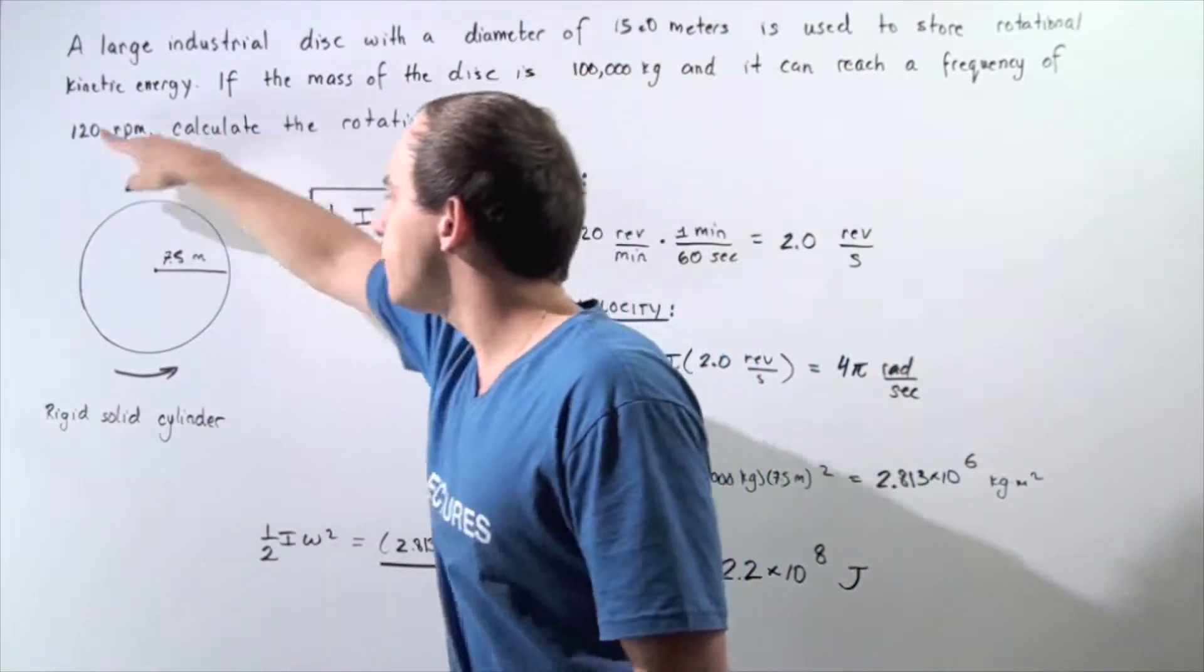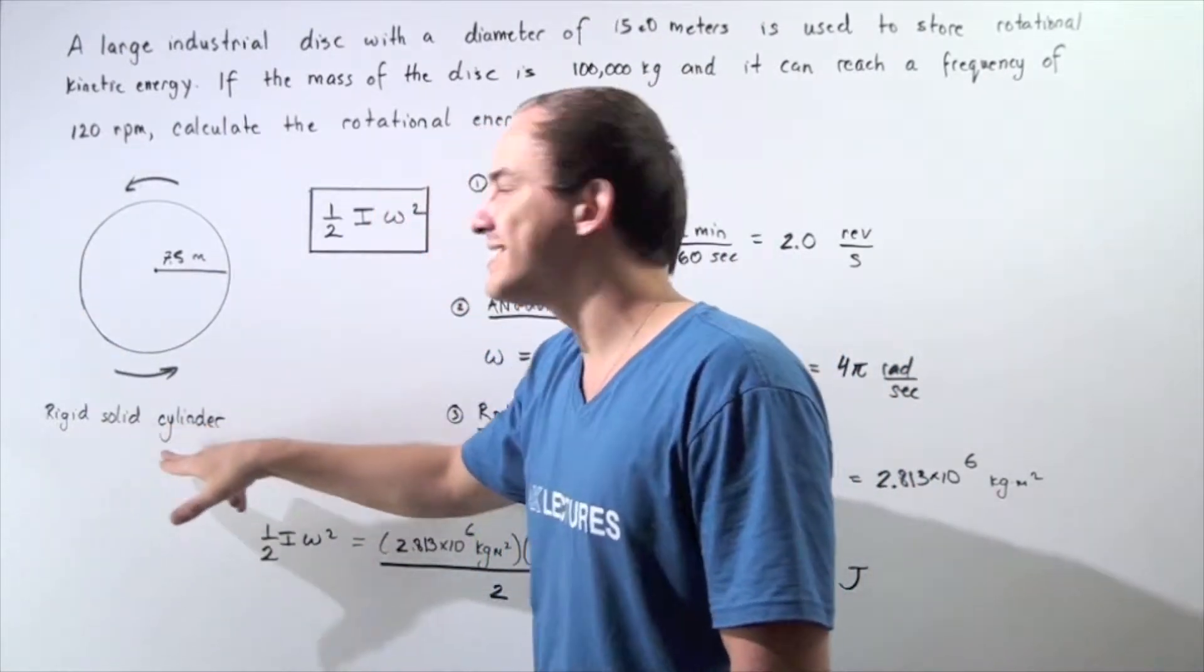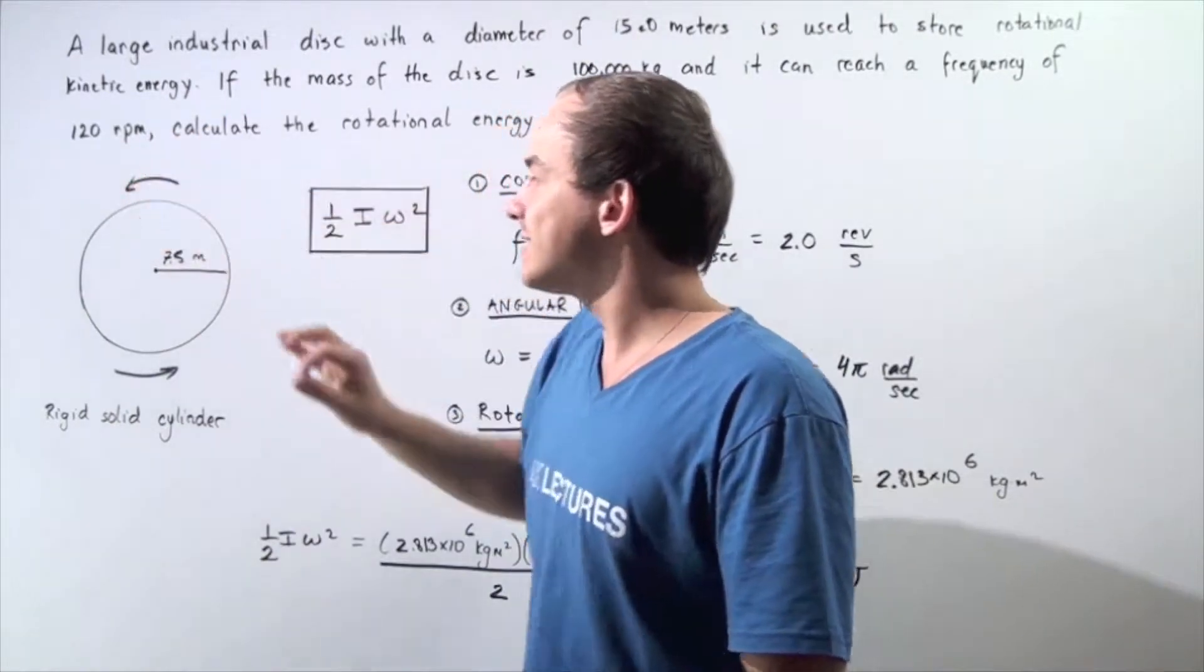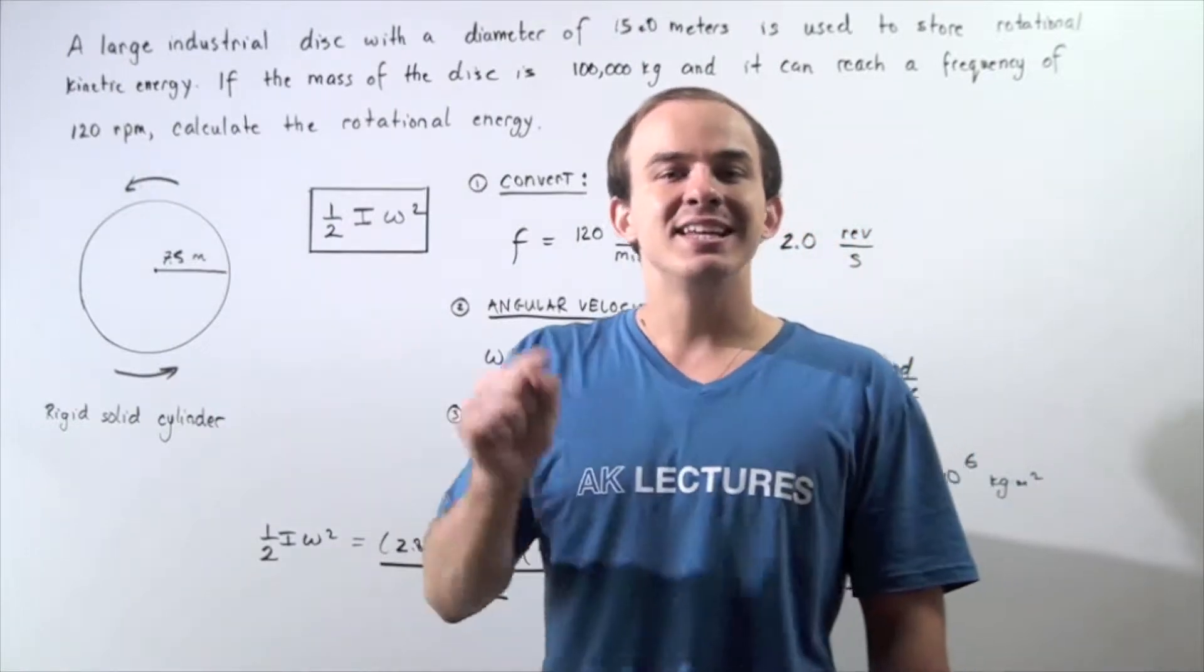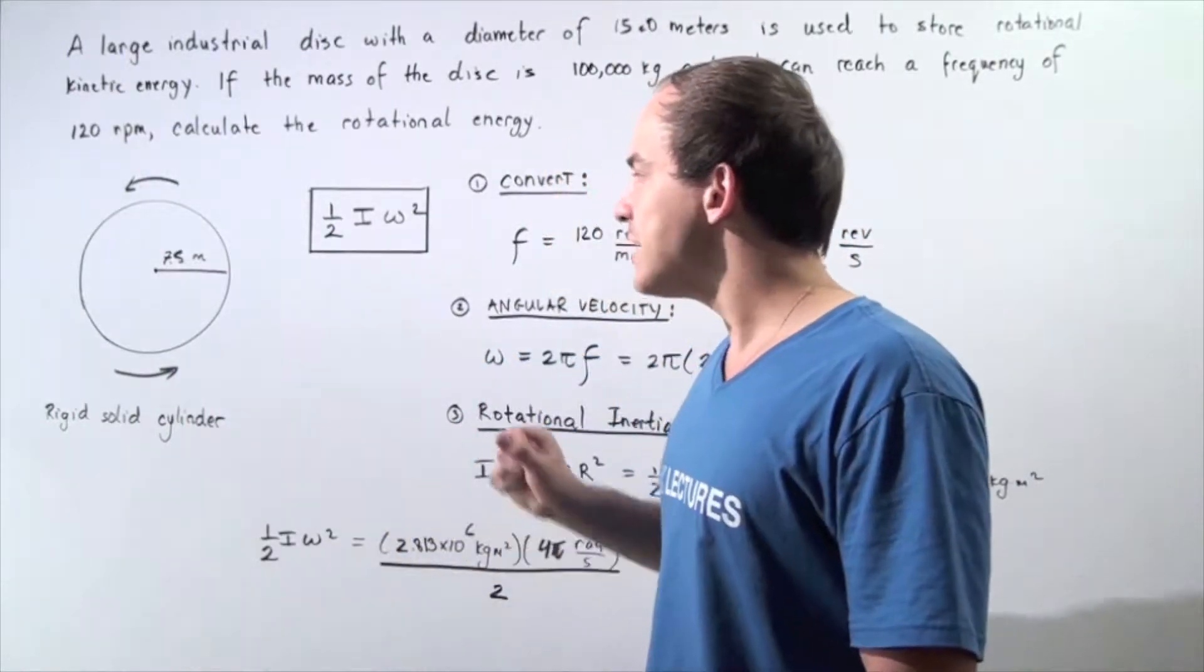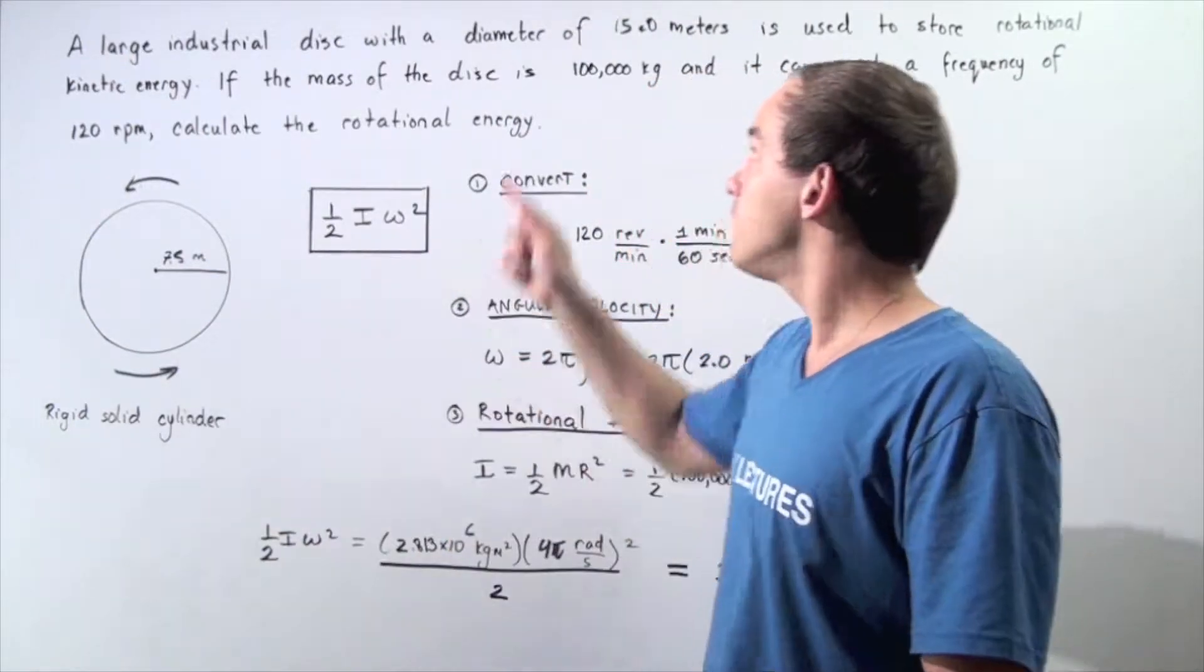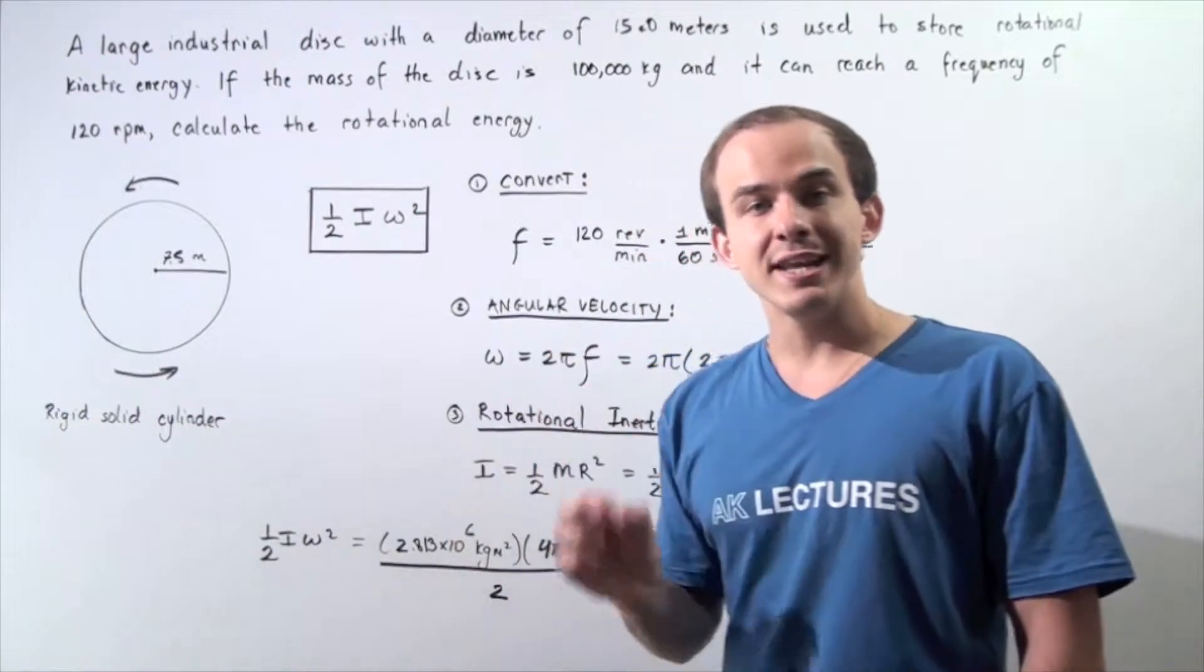So here we have the following object, a disk, which is a rigid solid cylinder. Now, the point or the center of mass is the point through which our axis of rotation passes. And the distance from the axis of rotation to any point along the disk is half of our diameter. So 7.5 meters is the radius.